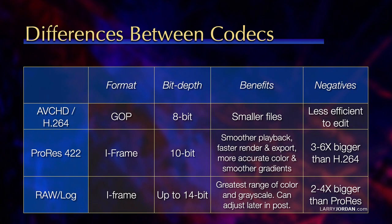Then we've got RAW and Log files, also I-frame-based, up to 14-bit depth, which gives us the greatest range of color in grayscale, which allows us to adjust colors in grayscale later in post. But those files are 2 to 4 times bigger than ProRes. So the more accurate color that we want, the faster response that we want, the bigger the files have to become.